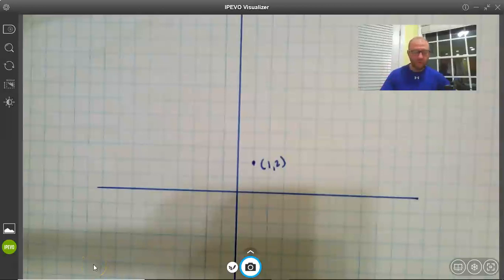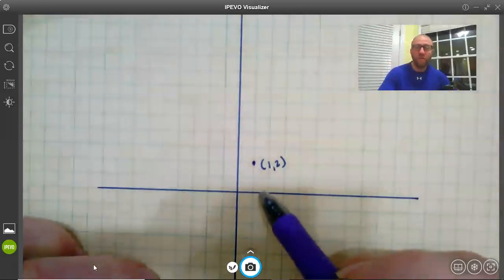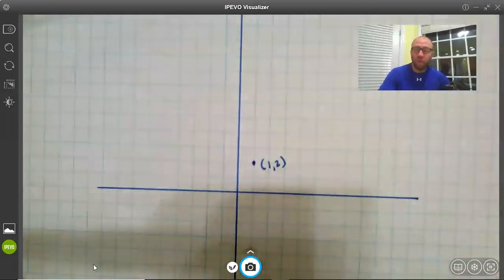So here we're trying to find all the points in the coordinate plane that are three times as far from the origin as this point (1, 2).